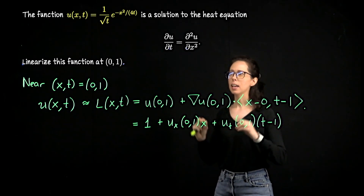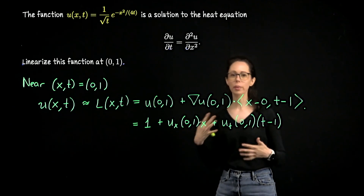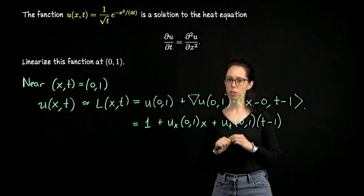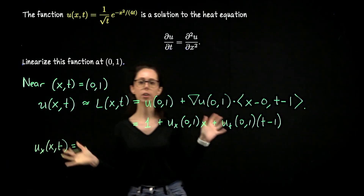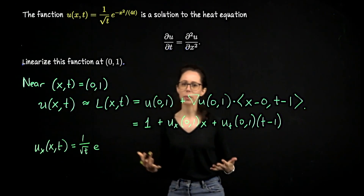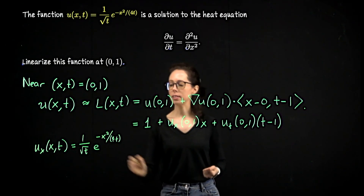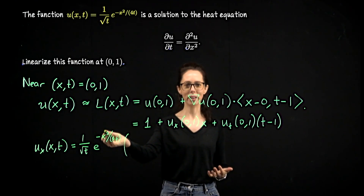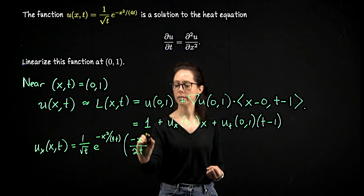Since t appears in two denominators and inside a square root, differentiating with respect to t would require quotient rule with a square root — not as nice. So let's compute the x partial derivative of u. In general, u sub x: the factor 1 over square root of t is treated as a constant, and we differentiate the exponential. That brings down negative 2x over 4t, which simplifies to negative x over 2t.